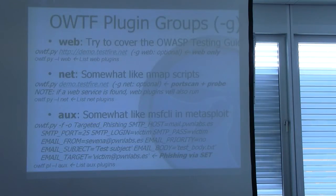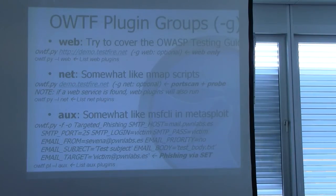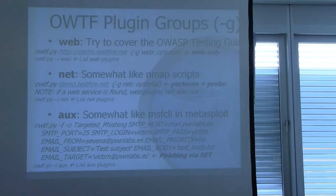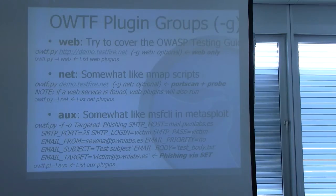There are three main plugin types: web, net, and auxiliary. Web plugins try to cover the OWASP testing guide. Net plugins are a little bit like Nmap scripts — they try to probe for network services. Auxiliary plugins are like the MSF CLI way of calling Metasploit — shell one-liners to do some stuff. For example, this is an example to run targeted phishing attacks through the social engineering toolkit.